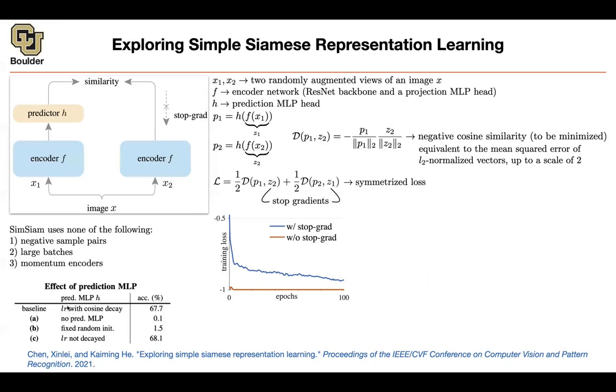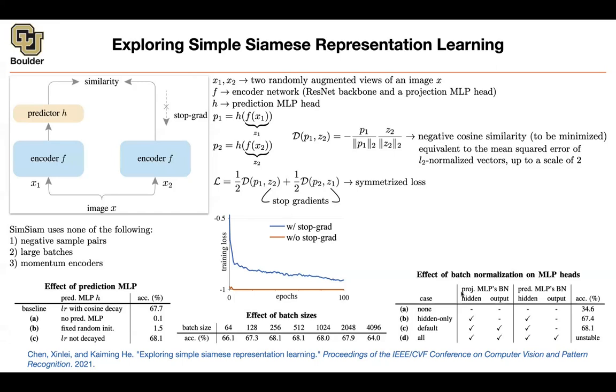The learning rate schedule doesn't really matter. You can have a cosine learning schedule, which is you have a warm-up stage, and then you follow the cosine function versus not even decaying your learning rate, having it to be a constant number throughout your training process. The prediction head is crucial. Without it, you're going to converge to a constant solution. This is basically the accuracy of random chance, or flipping a 1,000 possibility coin. The other thing that is important is that your batch size doesn't really matter. Whether it be 64, 128, or very large ones, you still have similar level of performance. Unlike what happens with contrastive learning, that batch size matters.